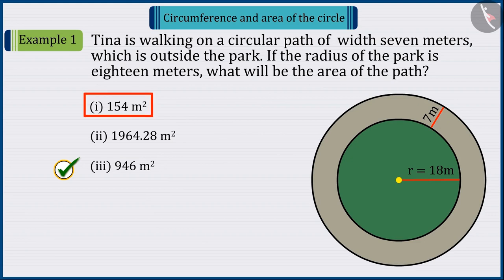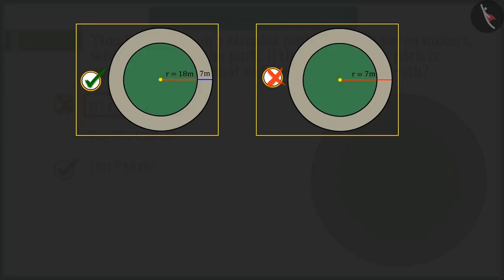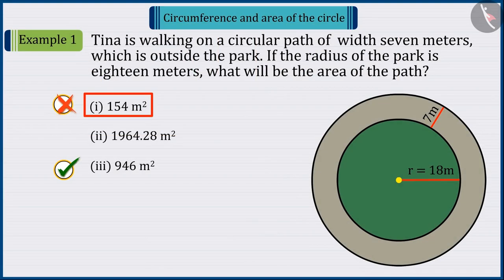If you have selected option 1, it was a good try. But, it was the wrong answer. Because, when you have to find the area of the path, then you consider the width of the path as the radius itself and solve on the basis of it. Because of that, your answer gets wrong.